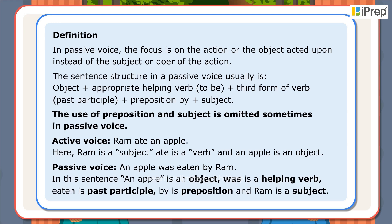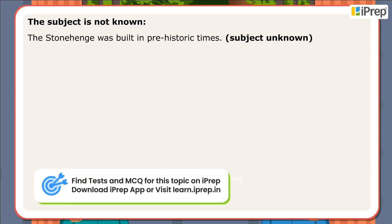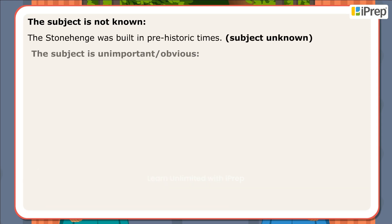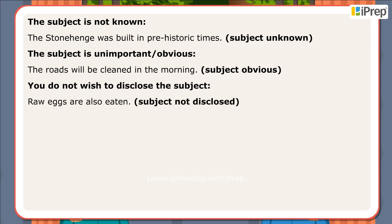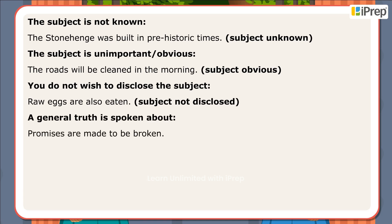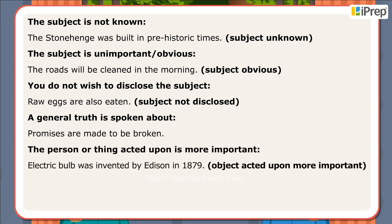We use passive voice when: The subject is not known — 'The Stonehenge was built in prehistoric times' (subject unknown). The subject is unimportant or obvious — 'The roads will be cleaned in the morning' (subject obvious). You do not wish to disclose the subject — 'Raw eggs are also eaten' (subject not disclosed). A general truth is spoken about — 'Promises are made to be broken.' The person or thing acted upon is more important — 'Electric bulb was invented by Edison in 1879' (object acted upon is more important).